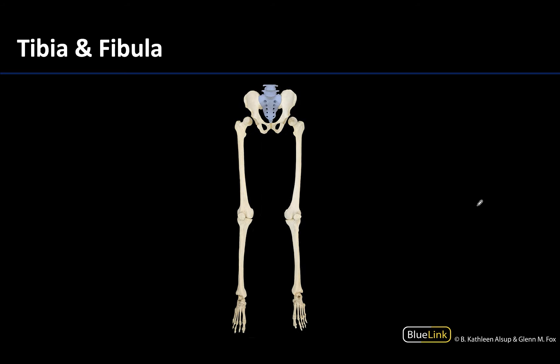Looking at the same image we've been returning to in terms of the lower limb, you can really clearly see the tibia here. The tibia is going to be the largest of the bones of the leg — it will be the weight-bearing bone and also the medial bone. I can't really see the fibula — can you?